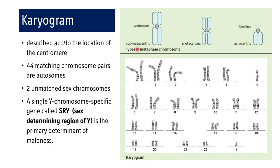The dyes produce a characteristic banding pattern made up of lighter and darker regions. Chromosomes that match in size, shape, and banding are called homologous chromosomes. The two homologs of each pair contain the same set of genes. Although for some of those genes they may carry different alleles.